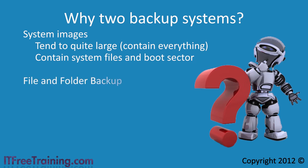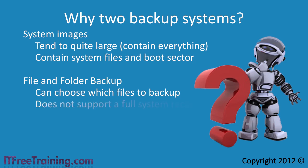The file and folder backup, unlike the system image backup, allows you to choose which files and folders to backup. You could choose to backup the system and program files in this backup, however this backup does not support a full Windows 7 recovery. If your hard disk were to crash, you would only be able to recover individual files, not the complete system.